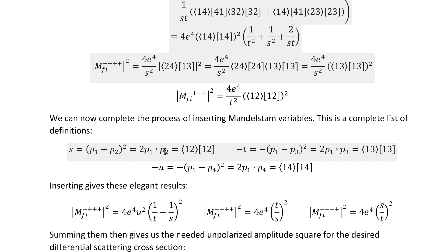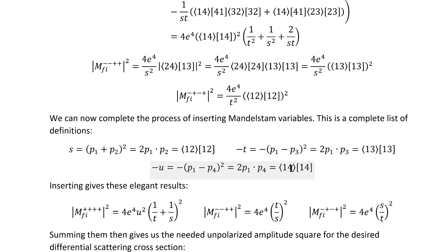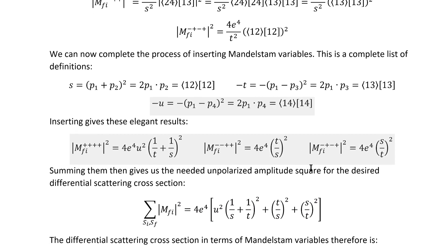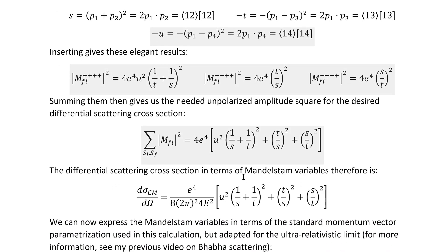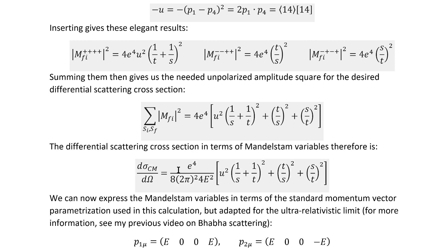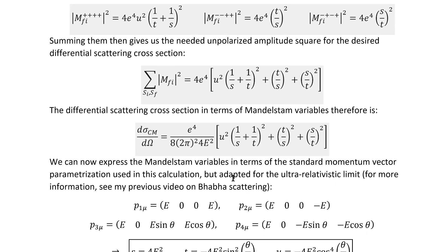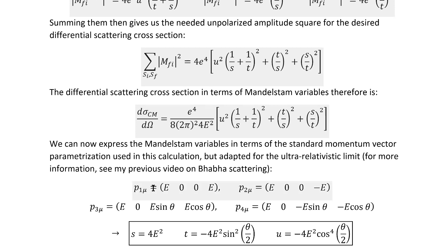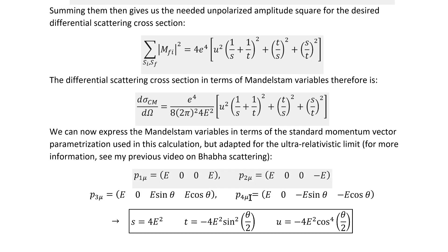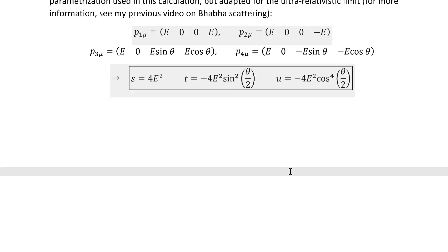From here, we can realize that in accordance with usual identities, the combinations of brackets we're getting are actually equal to individual Mandelstam variables. That ultimately gives us very elegant results, and now we're ready to sum them to get the unpolarized amplitude squared. We can then insert that back into the differential scattering cross-section. From there, we can transition to the usual parameterization used in the last video, specializing to the ultra-relativistic limit, which gives us the values for the Mandelstam variables.